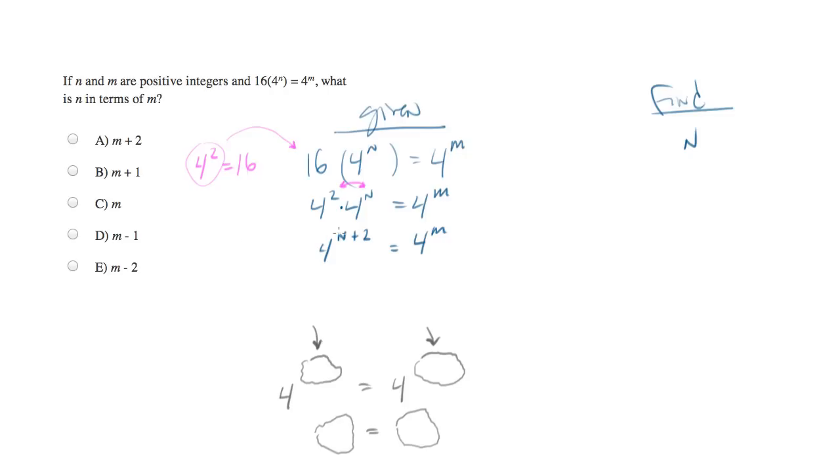And now you can see that we do have a common base on either side of the equation. So we can simply take the exponents and set them equal to one another. So we'll get n plus 2 equals m. We've been asked to solve for n, so let's go ahead and do that.